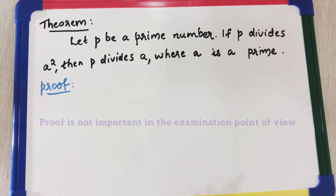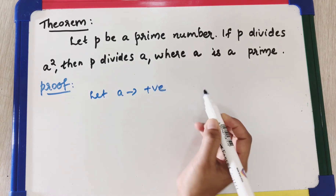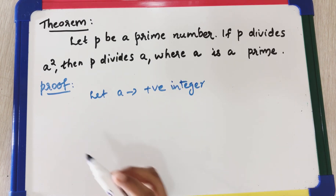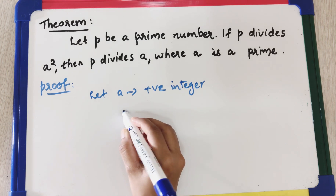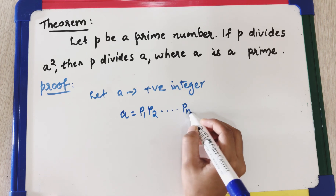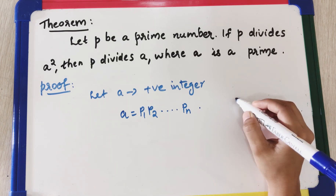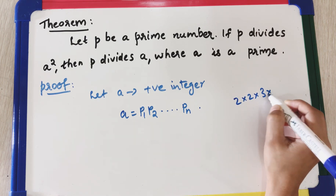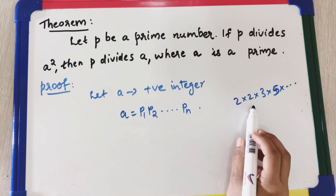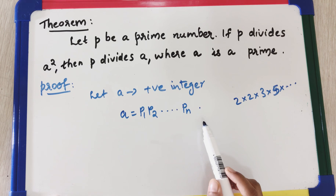Let a be any positive integer. Then by the fundamental theorem of arithmetic, a can be written as a product of primes: a = p₁ × p₂ × … × pₙ. Note that p₁, p₂, …, pₙ need not be distinct. For example, a could equal 2 × 2 × 2 × 3 × 5 × …, where p₁ = p₂ = 2, so primes in the factorization may repeat.